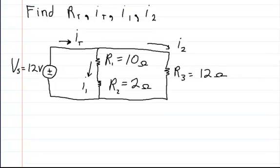If you look at the circuit, you'll notice that you have two branches, one here and one here, and they're both in parallel. So we automatically know that when you have a voltage supply in parallel with other elements or branches, the voltage across the individual branches is the same. So in this branch you're going to have 12 volts, and in this branch you're going to have 12 volts.